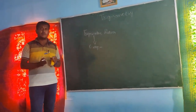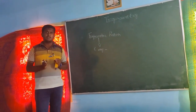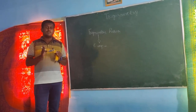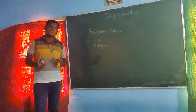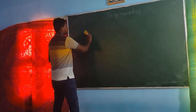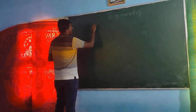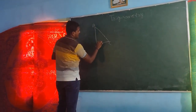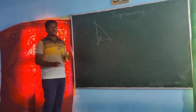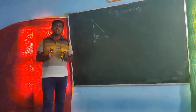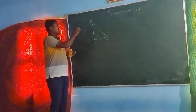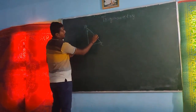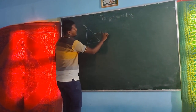Before studying a right angle triangle and defining any trigonometric ratio, we have to make sure that we fix one of the angles of the triangle. Here, angle B is equal to 90 degrees. Before defining any trigonometric ratio, we take angle A as our fixed angle. We know that AC is the hypotenuse side.